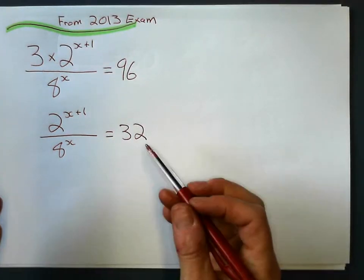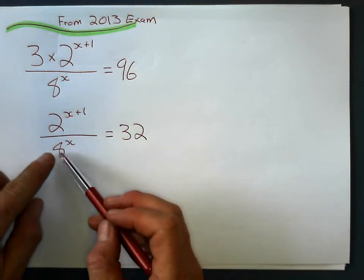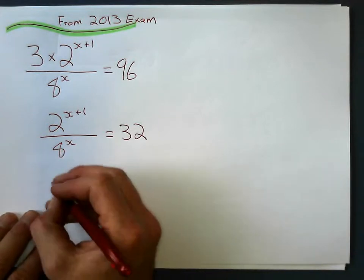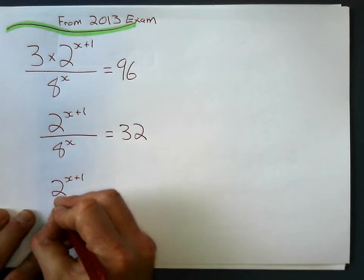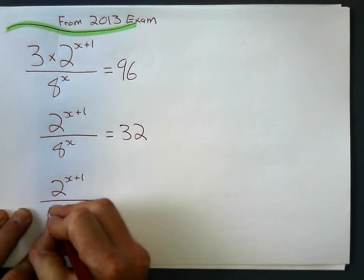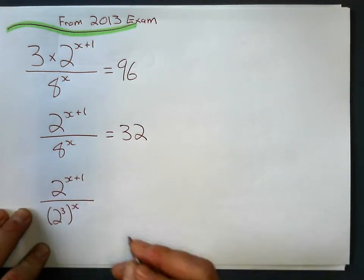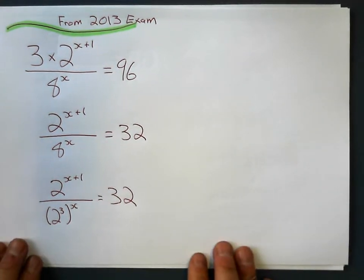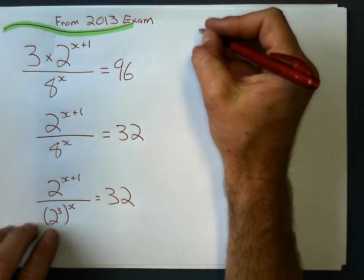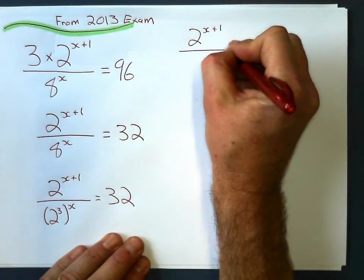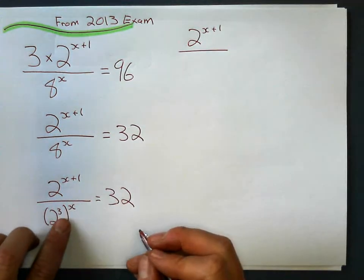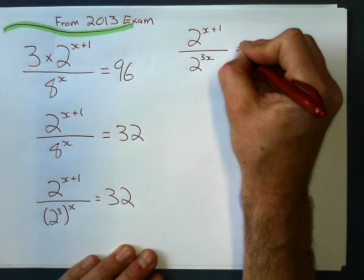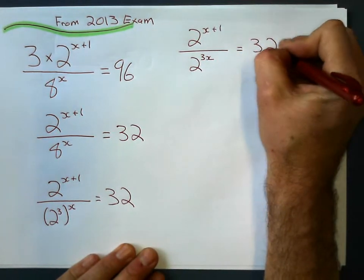So now I go, look, 8 is a power of 2, isn't it? So I'm going to rewrite 8 as 2 cubed. 2 to the power of x plus 1 on the top, and on the bottom, 8 is going to be 2 cubed to the power of x equals 32. Can't do anything here, so that's just 2 to the power of x plus 1. On the bottom, power to the power of power gets multiplied. That's 2 to the power of 3x, and that gives me 32.